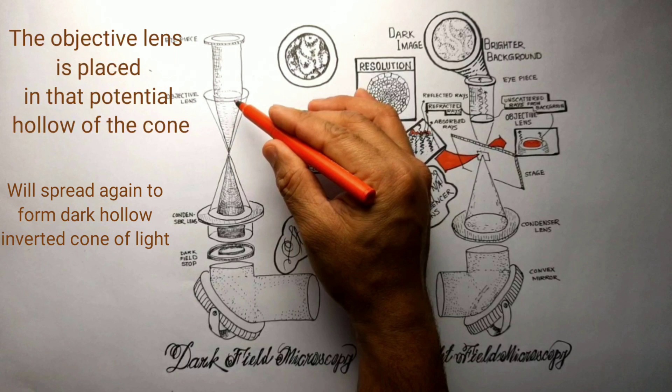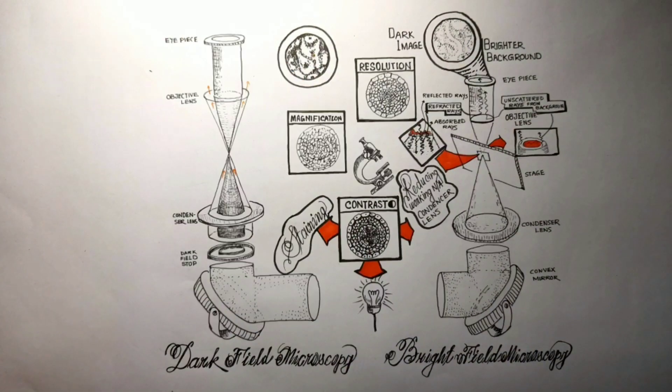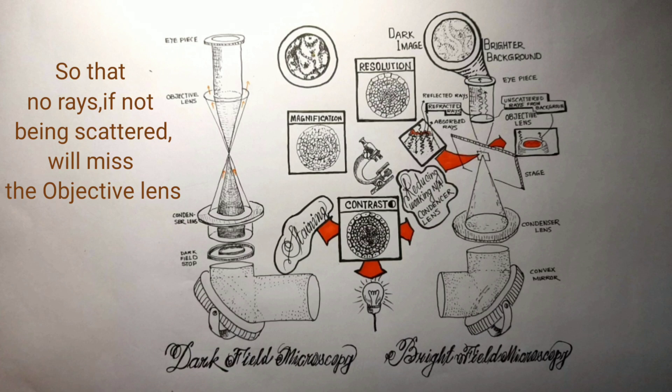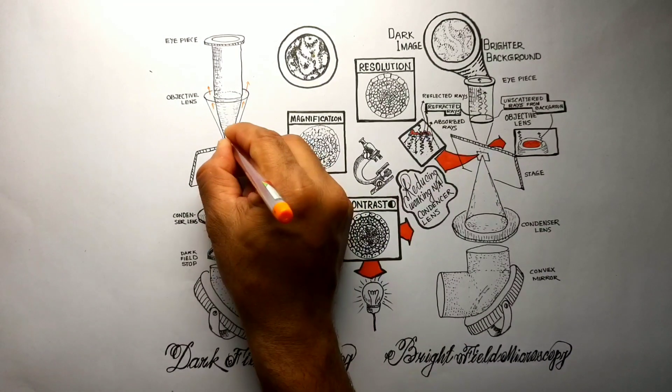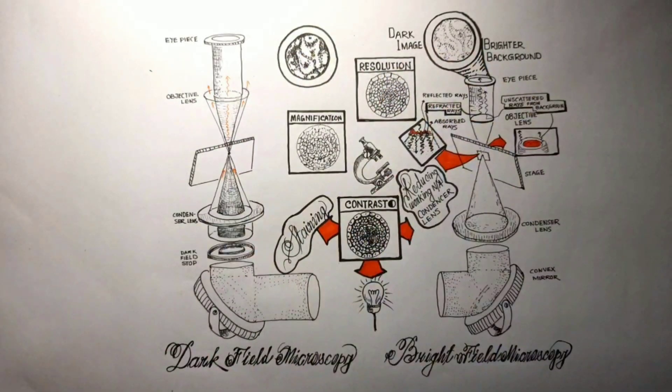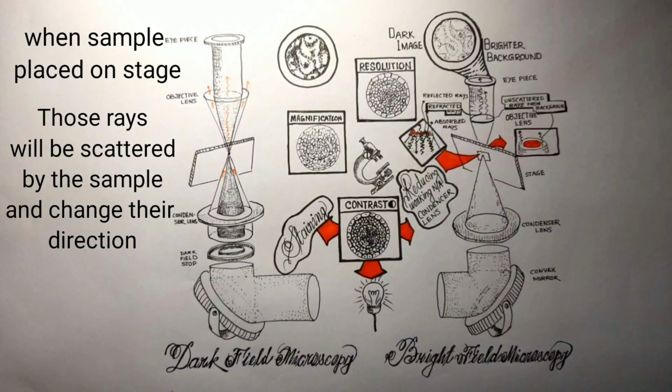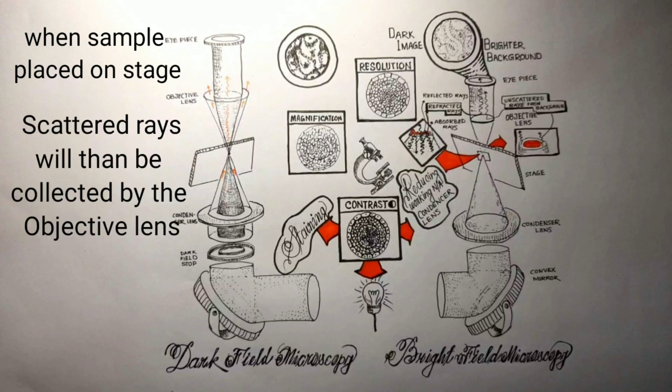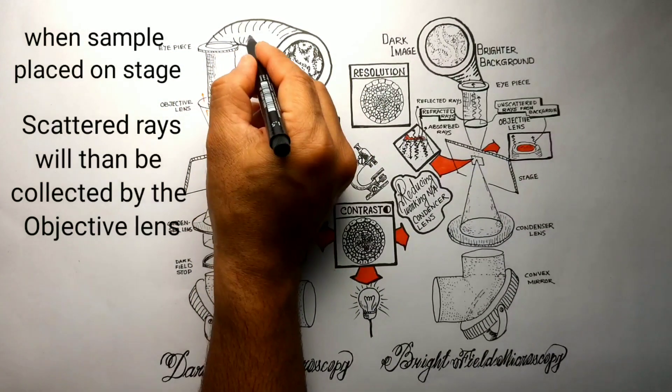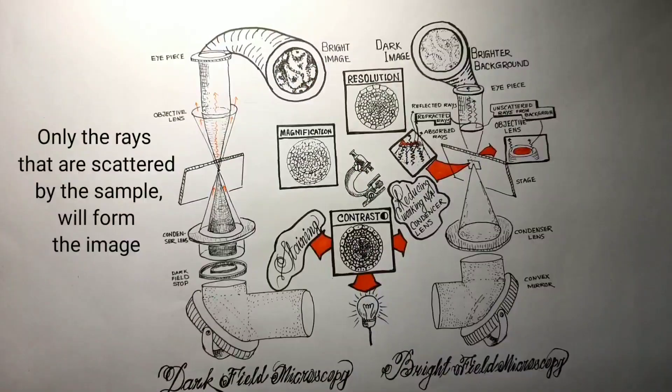In dark field technology, the objective sits in the dark hollow of the cone. As light propagates through and past, it will miss the objective lens, and no rays will enter. With no sample on the stage, the entire field appears black. When a sample is placed on the stage, the light strikes the sample at its sides and is scattered by it. These refracted and scattered rays from the sample are captured by the objective lens and used to form a bright image of the sample.